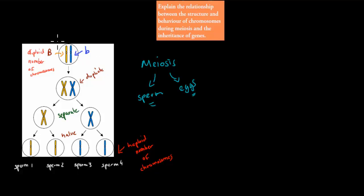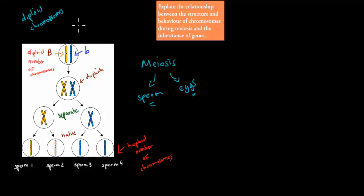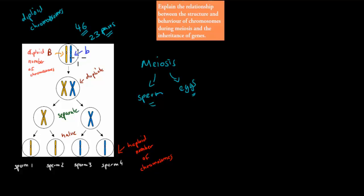Meiosis is often represented this way. In the beginning we have something called diploid. Diploid chromosomes means it has a full number of chromosomes — however many chromosomes the animal usually has. In our case, we have 46 chromosomes. Of those 46 chromosomes, they come in pairs — we've got 23 pairs of chromosomes that make up those 46. Diploid just means we have the full chromosome count.